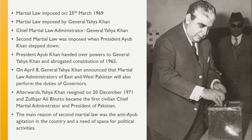President Ayub Khan handed over powers to General Yahya Khan and abrogated the constitution of 1962. On April 8, General Yahya Khan announced that martial law administrators of East and West Pakistan will also perform the duties of Governor. After Yahya Khan resigned on 20th December 1971, Zulfikar Ali Bhutto became the 1st Civilian Chief Martial Law Administrator and President of Pakistan. The main reason of the 2nd Martial Law was anti-Ayub agitation in the country and a need for space for political activities.